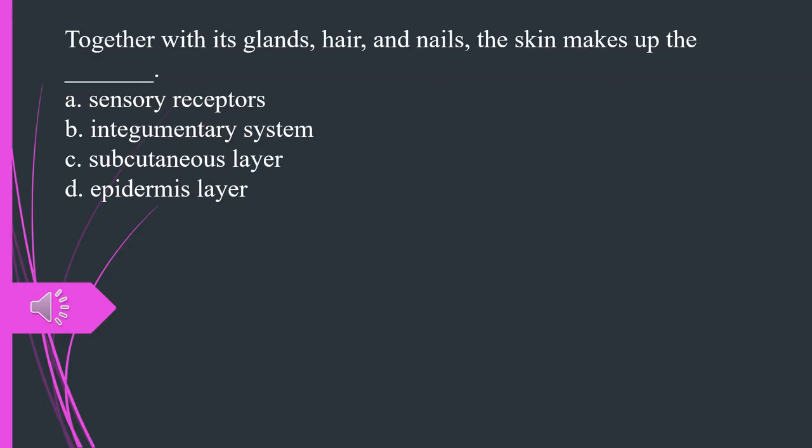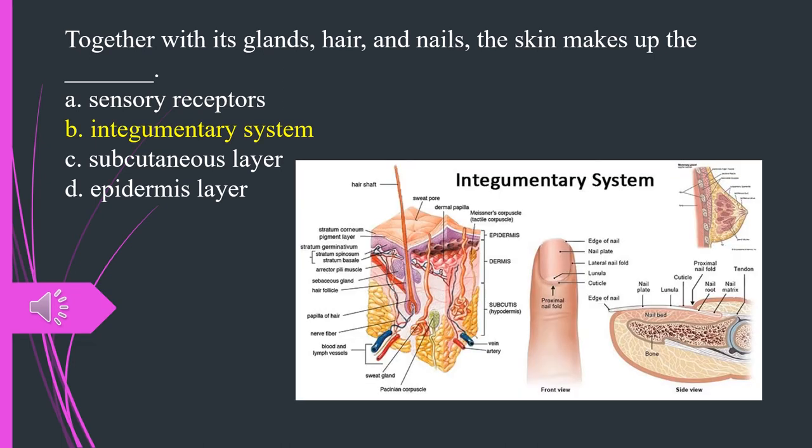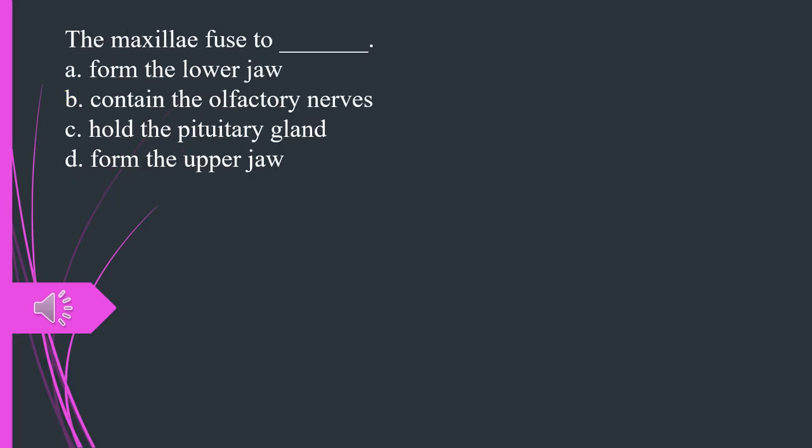Together with its glands, hair, and nails, the skin makes up what? A. Sensory receptors. B. Integumentary system. C. Subcutaneous layer. D. Epidermis layer. The answer is B. Integumentary system.